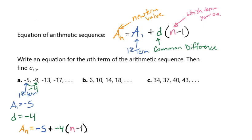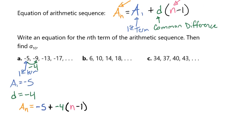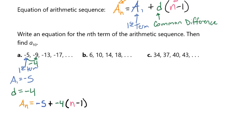So what we're going to do here to finish this, let's just move this up a little bit, is we're going to now distribute our negative 4. And that's going to give us a sub n equals negative 5 minus 4n plus 4. And we're going to combine our like terms with our negative 5 and our positive 4. And that's going to give us a sub n equals negative 4n minus 1. So that is our equation.